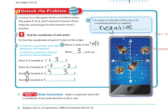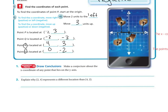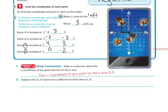Point S — I'm not going to move over at all because I'm going to start at my origin. So the x-coordinate is going to be zero. And then I'm going to move down two, so it's zero, negative two — because remember, whenever you move down it goes negative. Make a conjecture about the x-coordinate of any point that lies on the y-axis. The x-coordinate of any point on the y-axis is going to be zero, because you're not moving left or right — you're staying on the line.